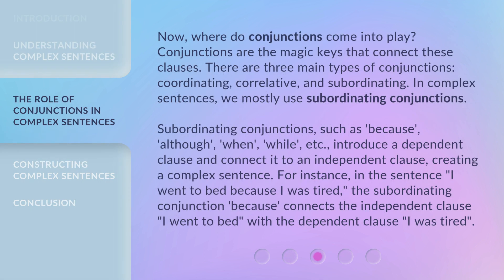Now, where do conjunctions come into play? Conjunctions are the magic keys that connect these clauses. There are three main types of conjunctions: coordinating, correlative, and subordinating. In complex sentences, we mostly use subordinating conjunctions. Subordinating conjunctions, such as 'because,' 'although,' 'when,' 'while,' etc., introduce a dependent clause and connect it to an independent clause, creating a complex sentence.